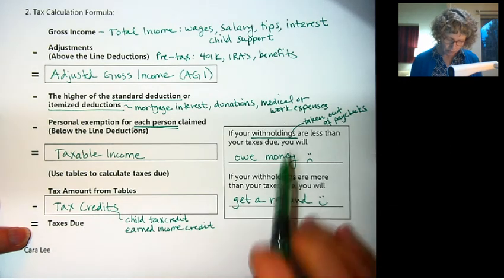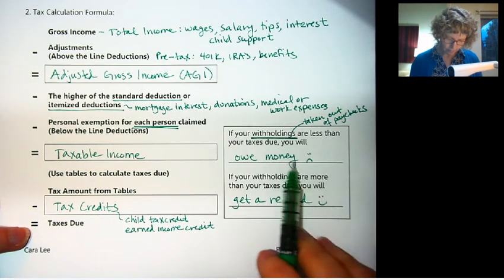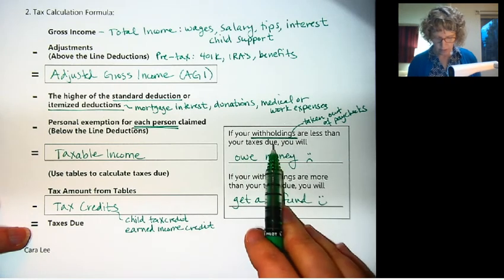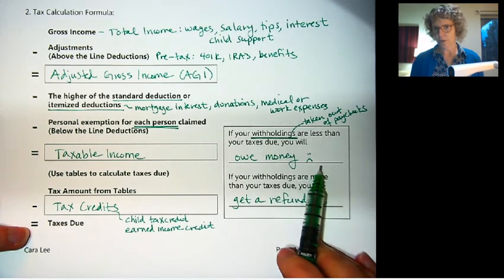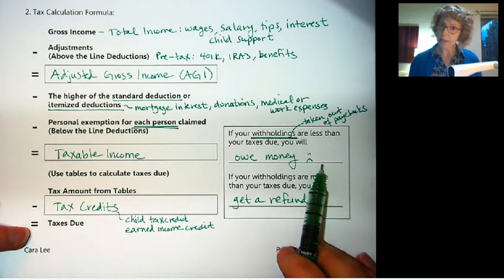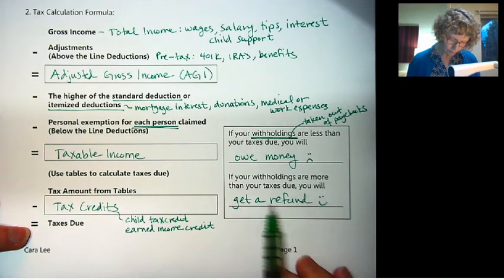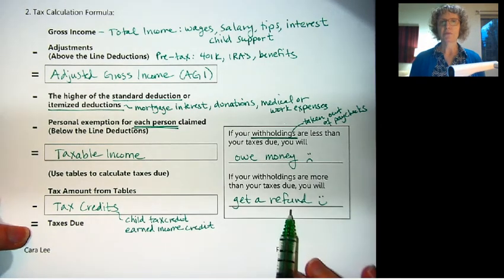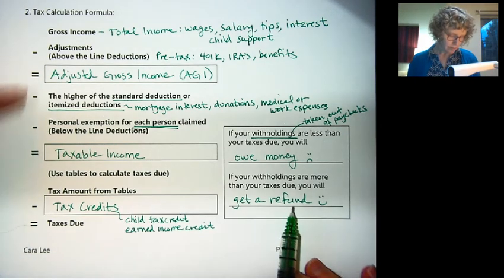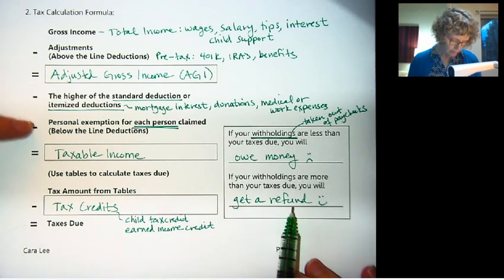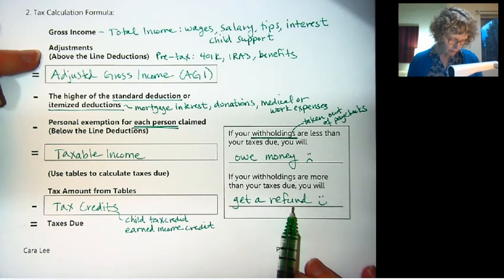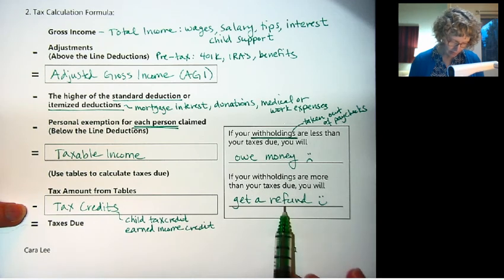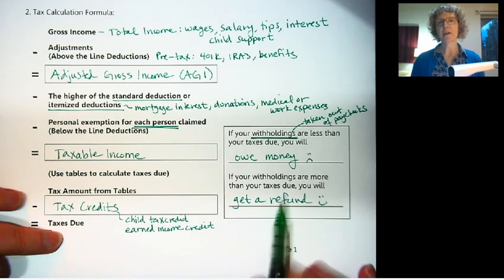Now, you've had withholdings throughout the year. So if your withholdings are less than the taxes due, then you're going to owe the difference. You have to pay more money to the government. If your withholdings were more than your taxes, then you get a refund. And so that's why usually people are trying to subtract as much as they can here, here, here, and here, to get their tax amount down so that they will get a refund.